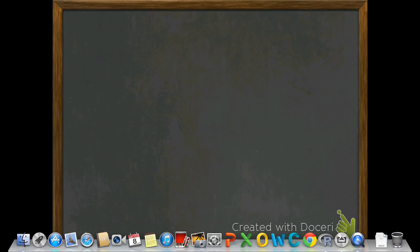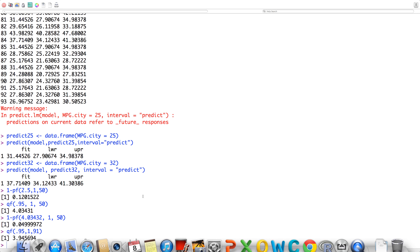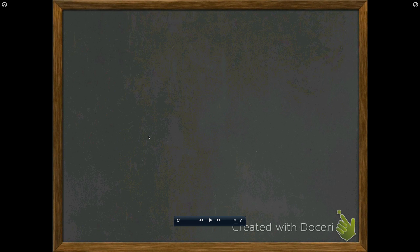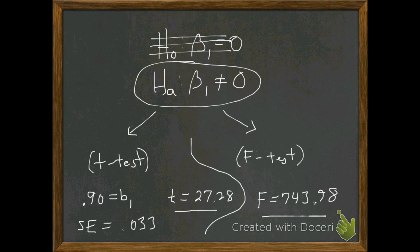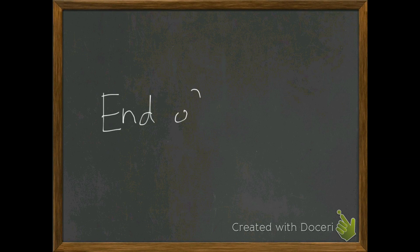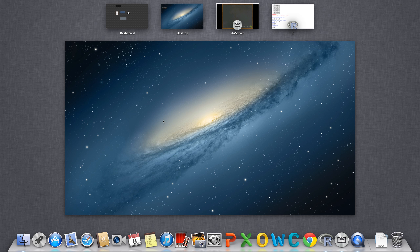So if we square both sides, we have precisely T squared. If we take our t-value of 27.28 and square it, appreciating rounding error, we notice that T squared equals F. F equals T squared. This shows the F-test and the two-tail t-test are equivalent in simple linear regression. That's the end of this video — talk to you later.